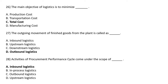Activities of Procurement Performance Cycle come under the scope of — Option A: Inbound Logistic, Option B: In Process Logistic, Option C: Outbound Logistic, Option D: Upstream Logistic. The correct answer is Option A: Inbound Logistic.